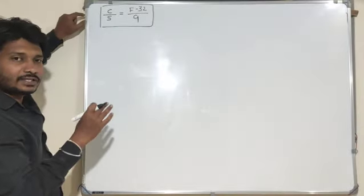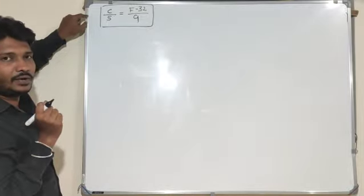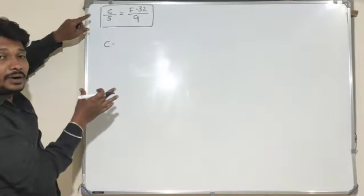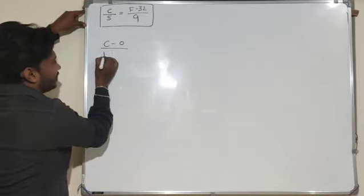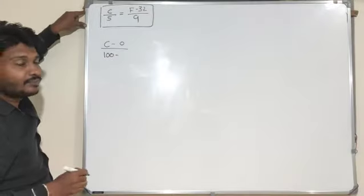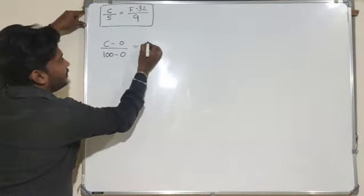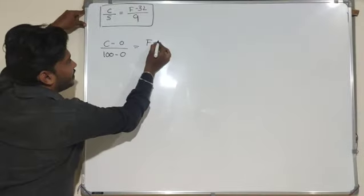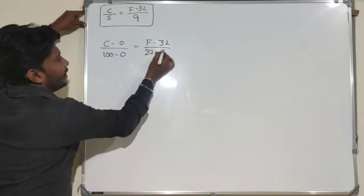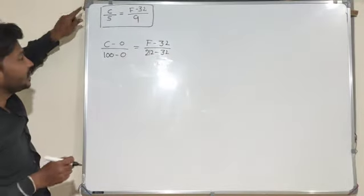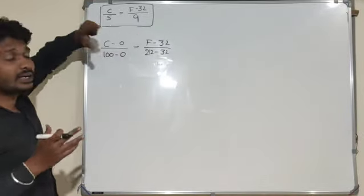The generalized formula is: upper fixed point minus lower fixed point, divided by upper fixed point minus lower fixed point. For Celsius, the lower fixed point is 0 and upper fixed point is 100. For Fahrenheit, the temperature F minus 32, upper fixed point is 212 minus lower fixed point 32.